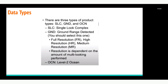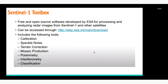Now we will go to the Sentinel-1 Toolbox — the tool we will use to analyze and pre-process the Sentinel-1 data. It is a free application that you can use to deal with radar images from Sentinel-1 and other satellites. This tool includes calibration, speckle noise filtering, terrain correction, mosaic production, polarimetry, interferometry, and some classification. Today we will use calibration, speckle noise filtering, and probably some classification.